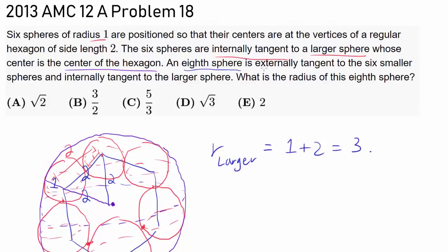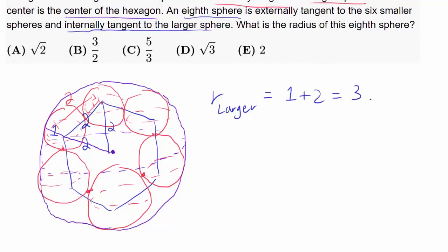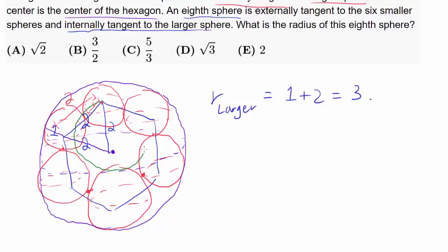An 8th sphere is externally tangent to the 6 smaller spheres and internally tangent to the larger sphere. Let's make sure we don't misinterpret this — the center of the 8th sphere is not necessarily at the center of the hexagon, because if it were, the top of the 8th sphere may not stretch high enough to touch the larger purple sphere.